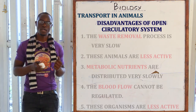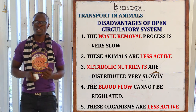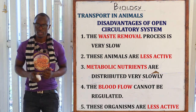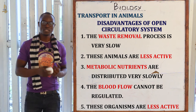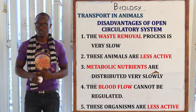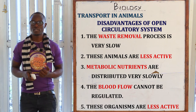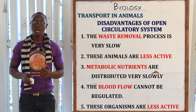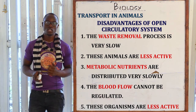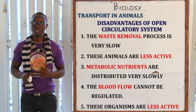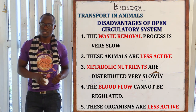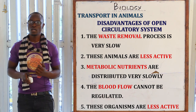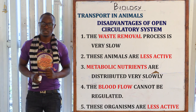The disadvantages of the open circulatory system are: waste removal is very slow; most of these animals are less active; nutrients are distributed very slowly; and blood flow cannot be regulated. Whether the organism is undertaking strenuous activity or very light activity, the blood flow remains the same.